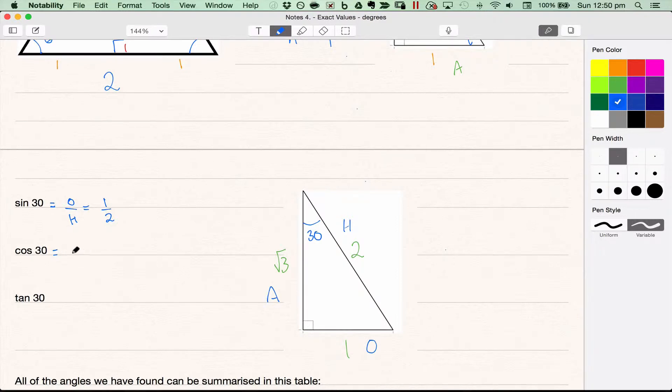Cos of 30, adjacent over hypotenuse, which is root 3 over 2. And all of these would need to have a little degree sign on them to show that we're using degrees, because next year we're going to learn about a different way of representing angles.